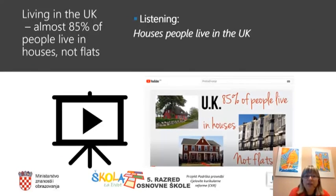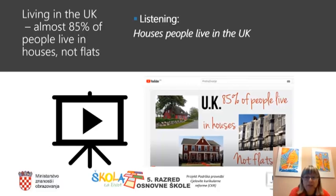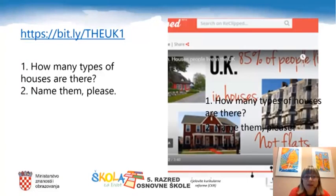Almost 85% of British people live in houses, not flats. We shall do some listening now, and the video is about houses people live in the UK. You will watch five short video clips, and for each part you will have some questions. Please prepare your notebooks to write down your answers — you can stop the video any time you wish. The first two questions are: How many types of houses are there? And name them, please. Please copy the link bit.ly/the-UK1 into your browser, watch the first video clip and write down your answers.